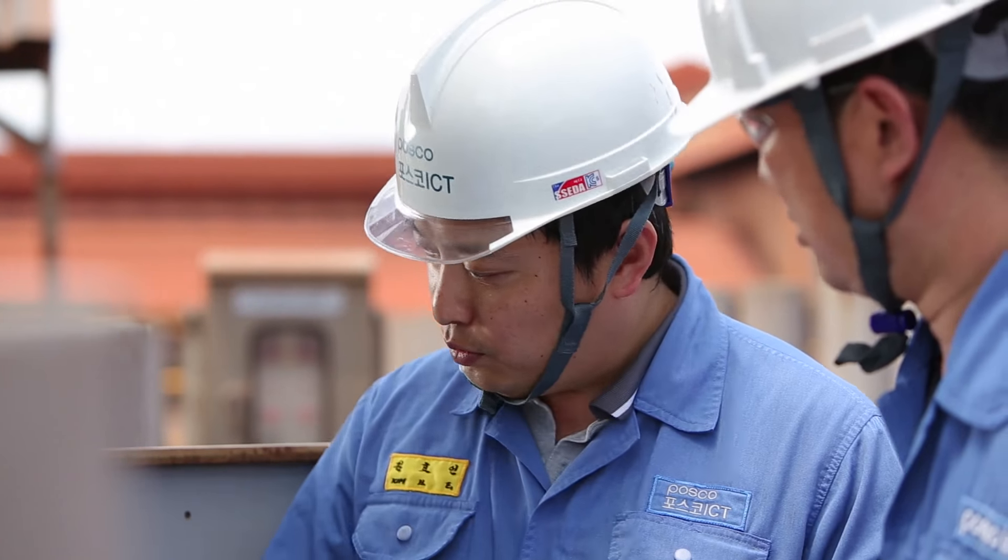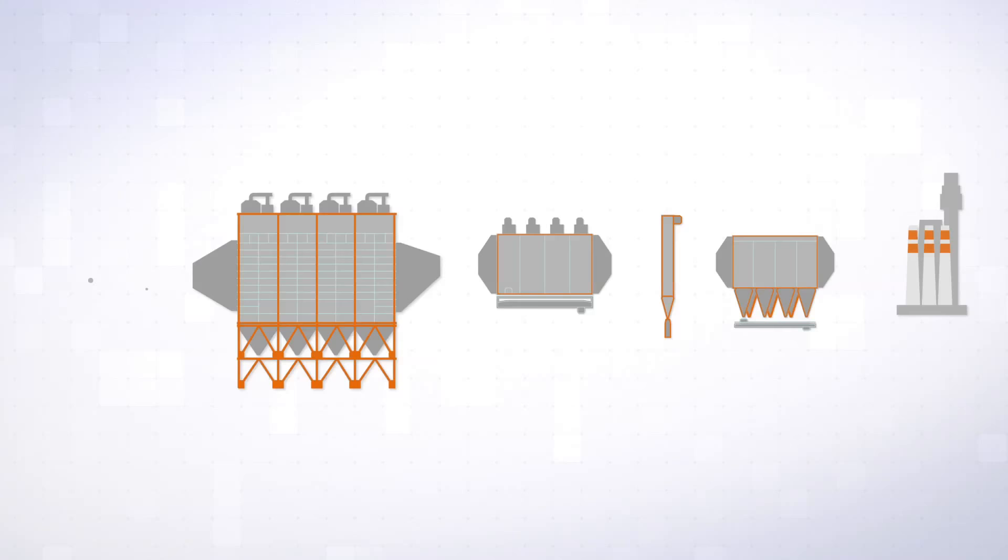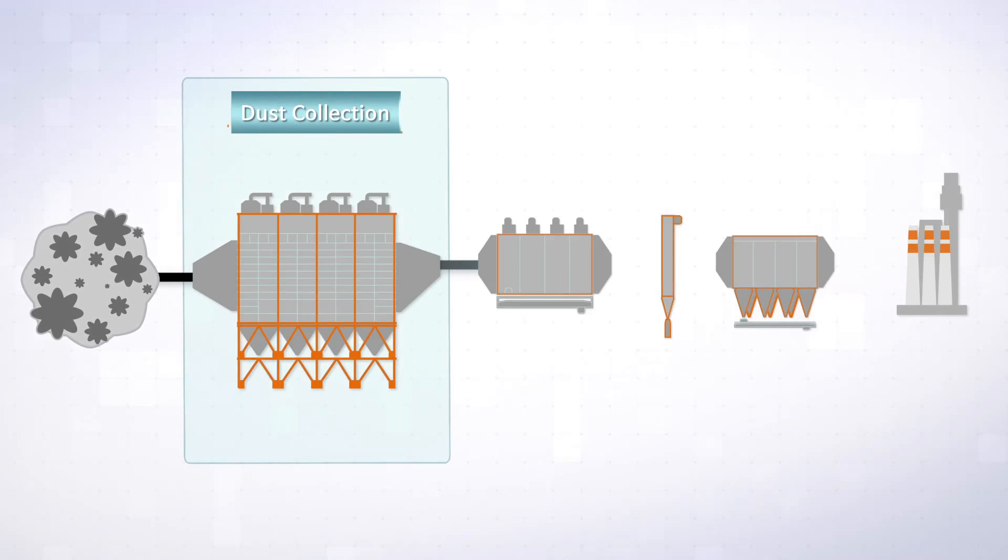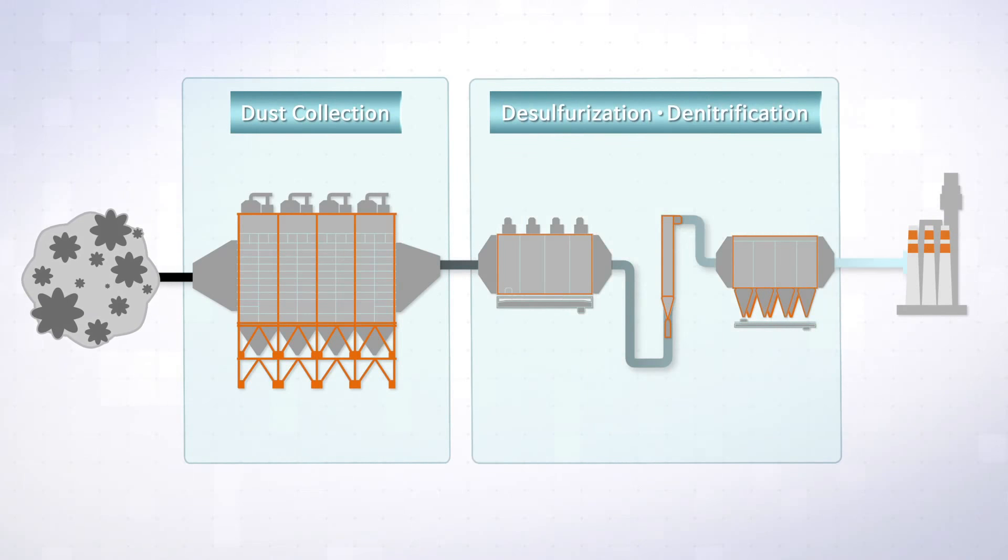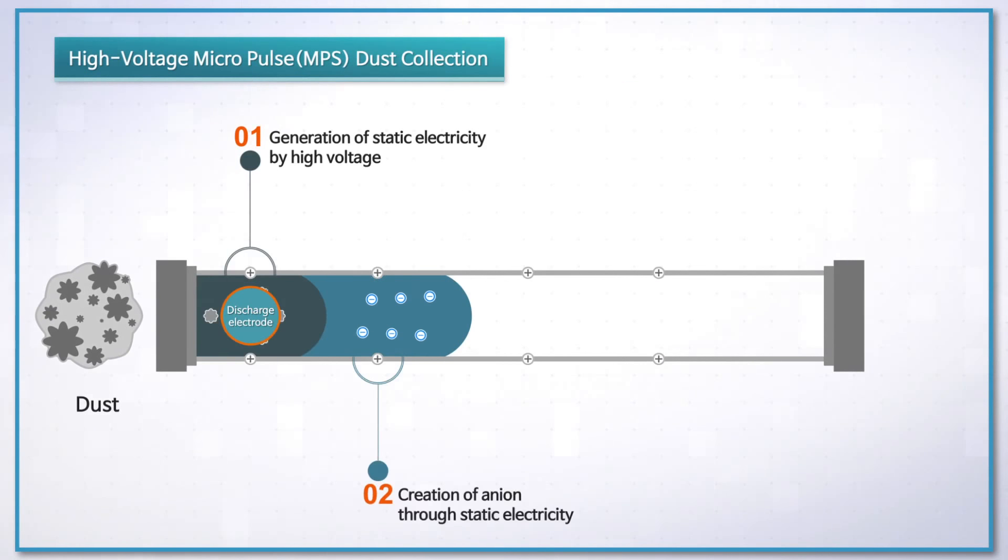POSCO ICT tries to resolve environmental problems caused by air pollution. It disposes of dust occurring in the industrial field using a high-voltage micropulse dust collector.